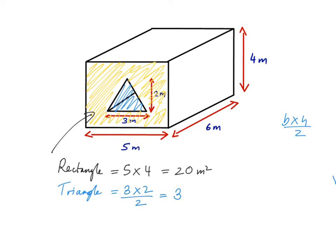Now what I need to do is subtract the area of the triangle from the area of the rectangle, leaving me with the shaded cross-sectional area, which is 20 minus 3 equals 17 square meters.